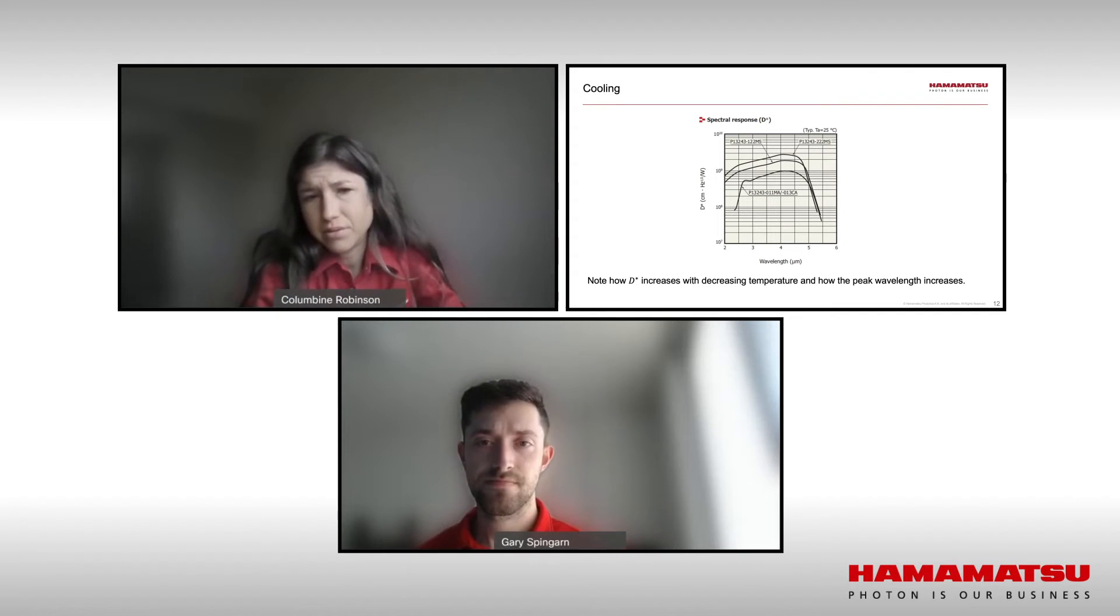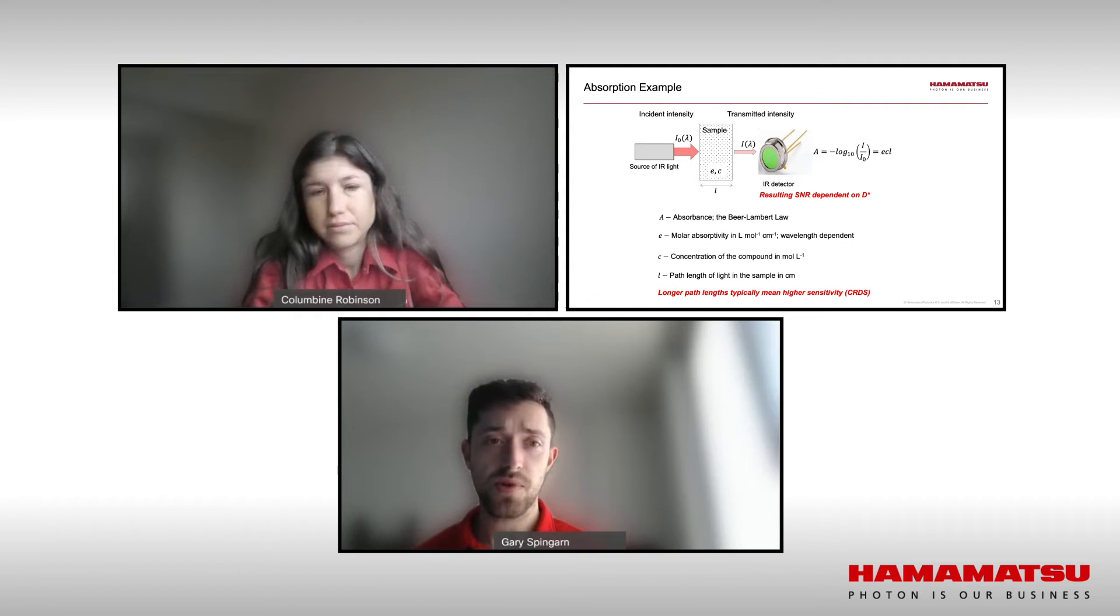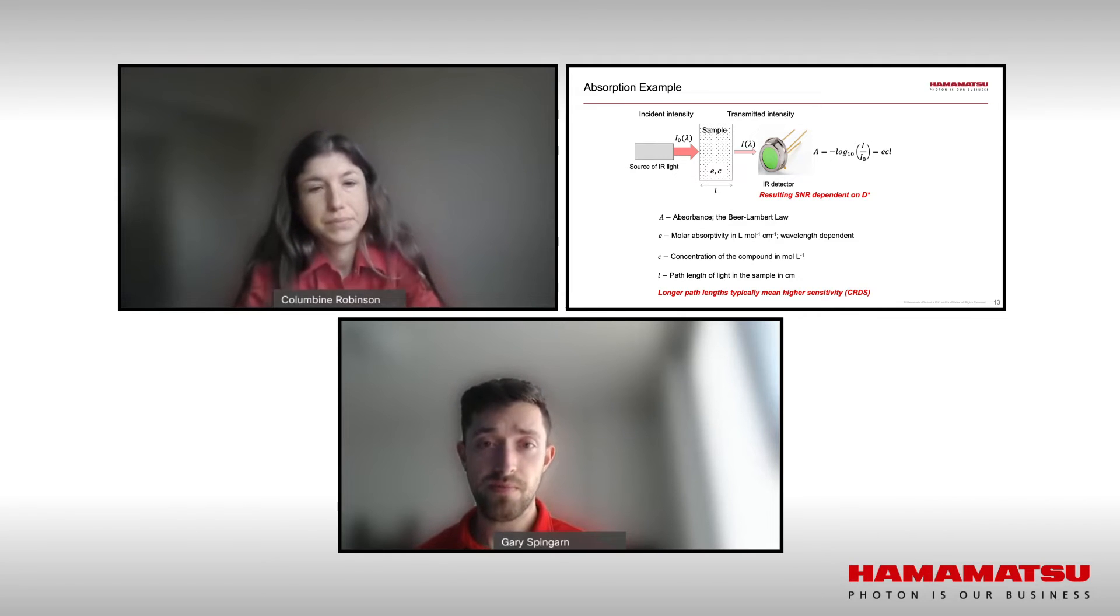Gary, can you give some examples of when these specifications are important? Absolutely. First and foremost, starting with d-star or detectivity, probably the number one figure of merit for infrared detectors in general. The higher it is, the more sensitive it is. Essentially, it's going to put less pressure on other components in the system. A specific example is cavity ring-down spectroscopy. In this configuration, effectively a very long path length is created, so the signal light is very, very low. In turn, this requires a much higher d-star in order to make the application feasible.